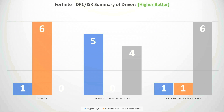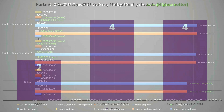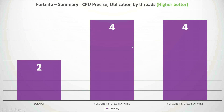If you play games, you likely care most about the DPC/ISR kernel results. For CPU precise, serialized timer expiration values one and two are equal, and by default two metrics show improvement — but actually by default was still better in those cases. So the results here show no clear gain from enabling the option.